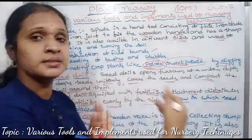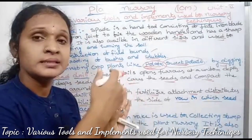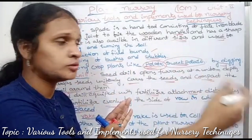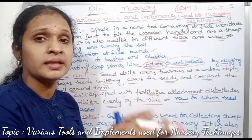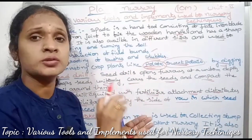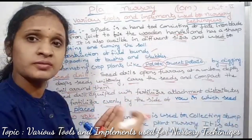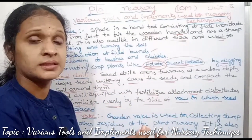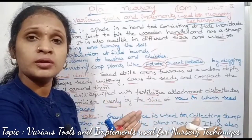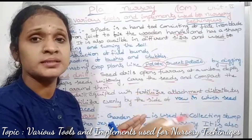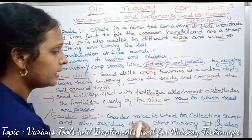The seed drill is used to open furrows and drop the seeds into the furrows. The seeds are then compacted into the soil around them. Fertilizer will also be distributed by the seed drill, and the seeds will be distributed along with it.